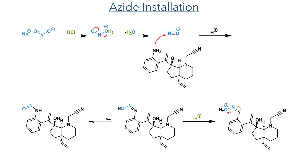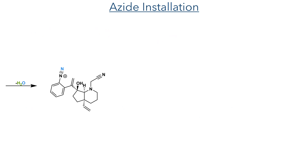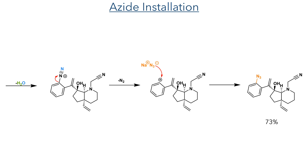In the next step, the newly revealed amine was then converted to an azide group. Sodium nitrite is reacted with hydrochloric acid, eliminating water to form a nitrosonium ion. This is attacked by the aniline, forming a hydroxydiazonium intermediate. Protonation of the hydroxy group and elimination of water forms a diazonium salt, which is a highly reactive aromatic species. This can eliminate nitrogen gas to form a phenyl cation that is then attacked by sodium azide, forming the product in a 73% yield.